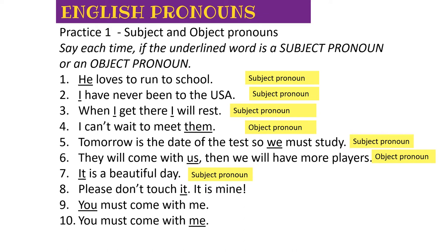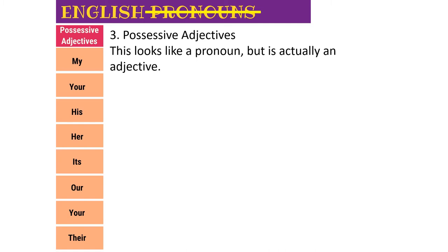Number seven: 'it' is a subject pronoun because 'is' is a linking verb, but it's still a verb, so 'it' is doing that action. Number eight: 'please don't touch it' - that's an object pronoun because 'it' is being touched. There's an implied subject of 'you should not touch it', but 'it' is still the object. Number nine: 'you must come with me' - subject again, because 'come' is the verb and 'you' is doing the action. Number ten: 'me' is an object pronoun and will always be an object pronoun.